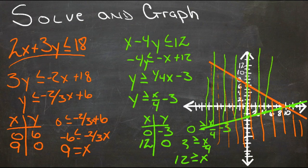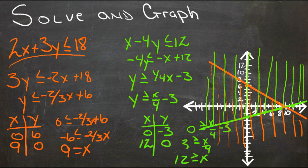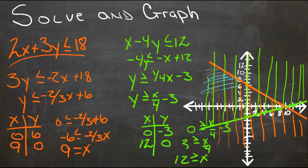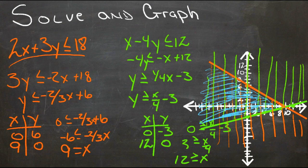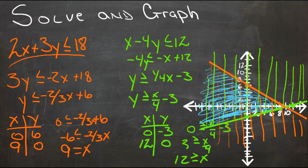The solution to the system is where both shaded regions overlap. This triangular area where both colors intersect represents the solution to the system of inequalities — anything inside this triangle satisfies both inequalities simultaneously.